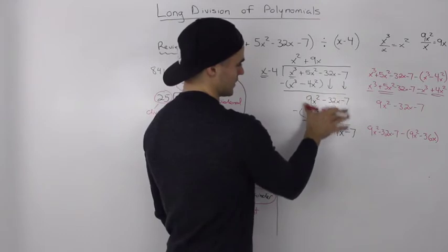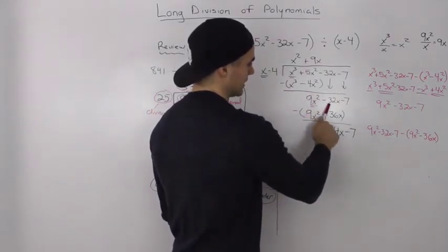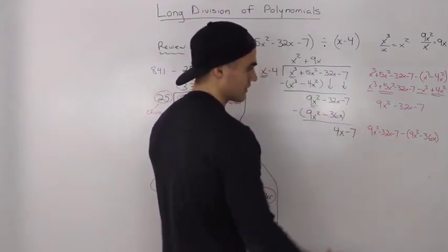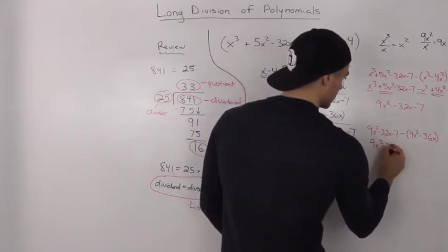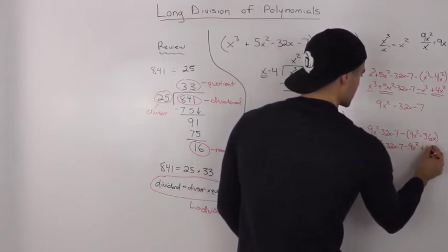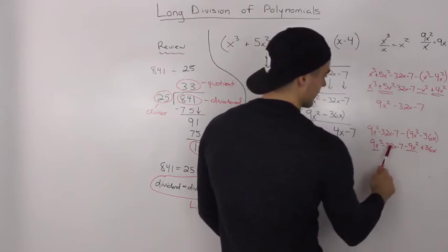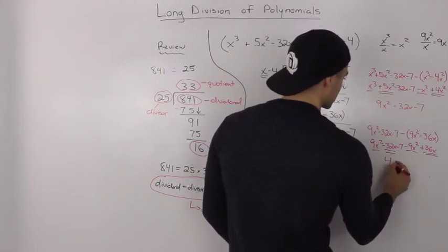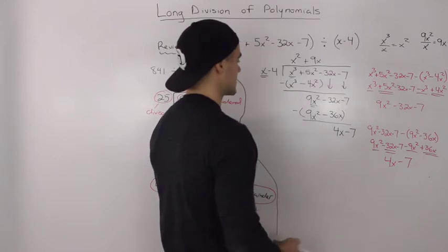Again, I suggest doing this vertical subtraction on the side. Take 9x squared minus 32x minus 7 and subtract the expression, distributing the negative inside the bracket to get minus 9x squared plus 36x. The 9x squared terms cancel, and negative 32x plus 36x gives 4x, with the negative 7 left — so that's how we get 4x minus 7.